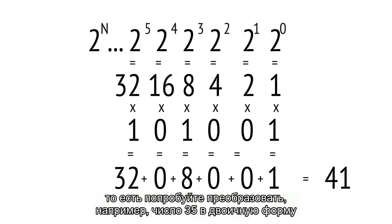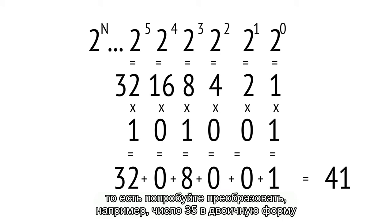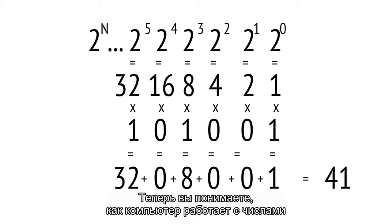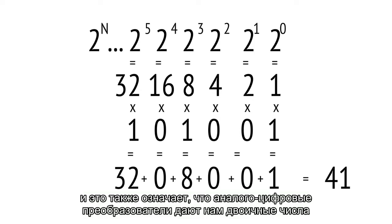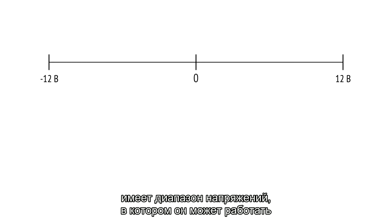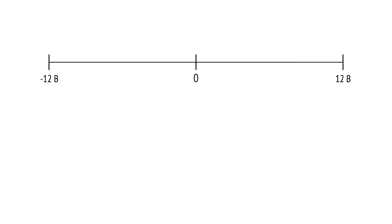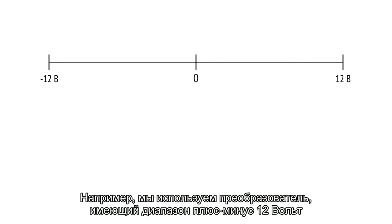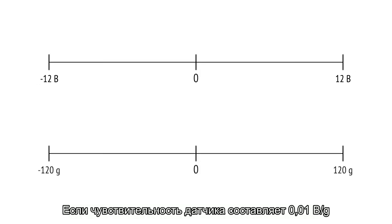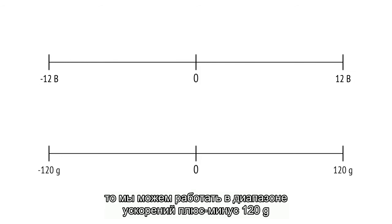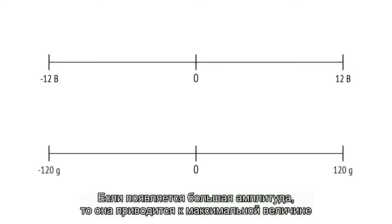Please try the inverse process as homework — convert, for example, the number 35 to binary format. Now you understand how the computer works with numbers: it uses binary numbers, and the analog-to-digital converters also give us binary numbers. Each ADC has a voltage range in which it can work. For example, with a plus/minus 12 volt range and a sensor sensitivity of 100 mV per G, we can operate with a plus/minus 120 G acceleration range.